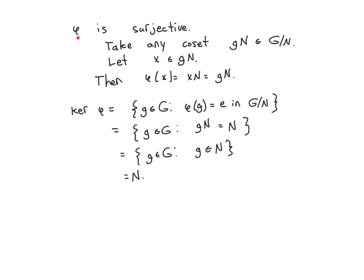Moreover, this canonical projection map is surjective. If you take any coset, it has a coset representative x; then phi of x is sent to the coset with coset representative x. Since x is in this coset, by properties of cosets these two cosets are equal, so every coset is the image of some element. Furthermore, N is in fact the kernel of this homomorphism.